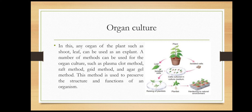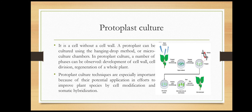The next type is organ culture. In this, any organ of the plant such as a shoot or leaf can be used as an explant. A number of methods can be used for organ culture, such as the plasma clot method, raft method, grid method, and agar gel method. This method is used to preserve the structure and function of an organism.